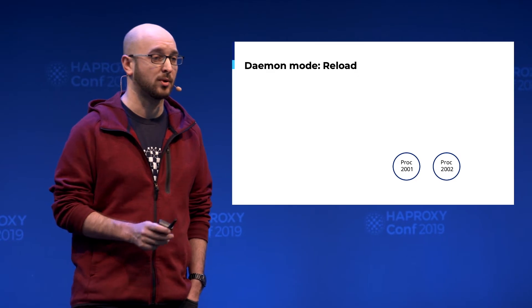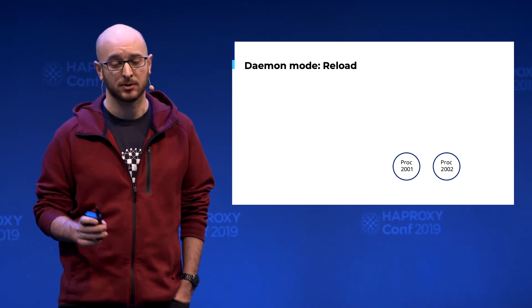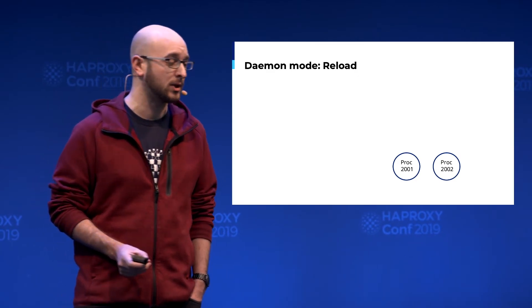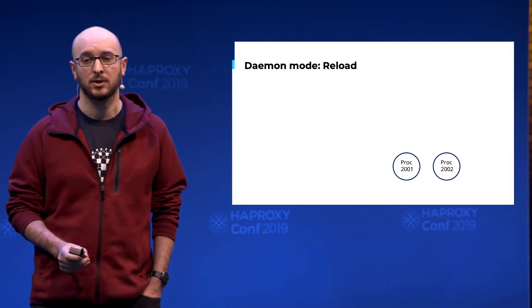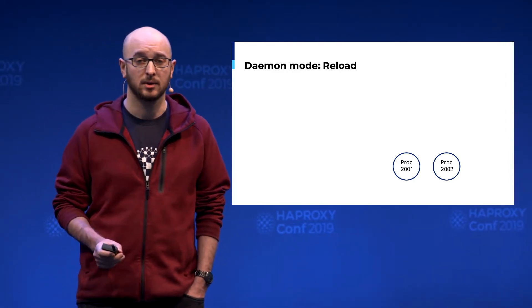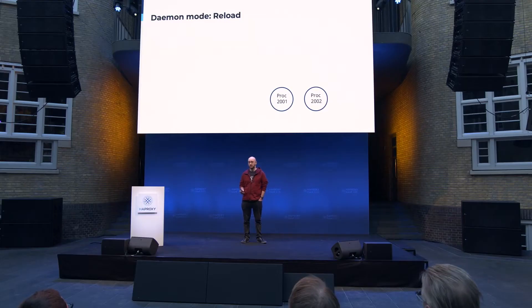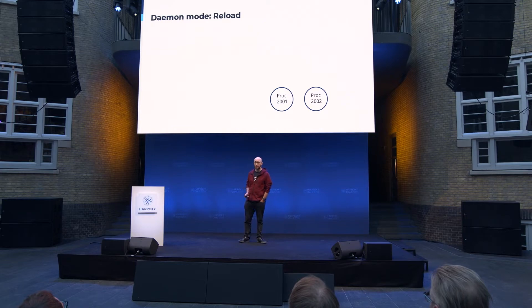This is the problem with systemd, because systemd will consider that HAProxy left because some process left. With systemd, we need a main PID, and to have a main PID you need a master process, and this is not the case in this mode.